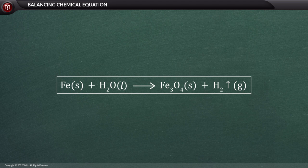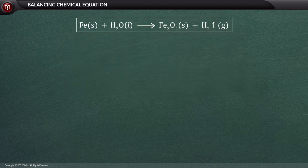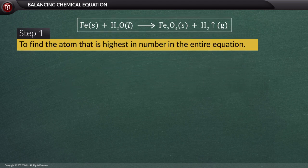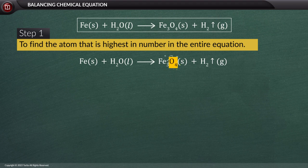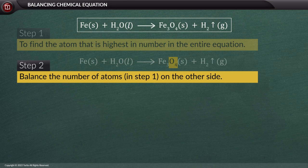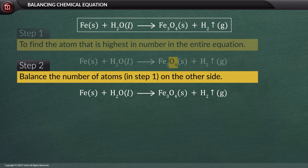So let us balance this equation: Fe(s) + H₂O(l) → Fe₃O₄(s) + H₂(g). Step 1: Find the atom that is highest in number in the entire equation. In this equation, the atom that is highest in number is 4 (oxygen). Step 2: Balance the number of atoms from step 1 on the other side. Let us put 4 in front of H₂O.